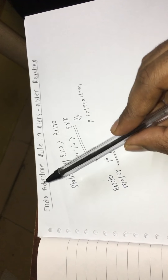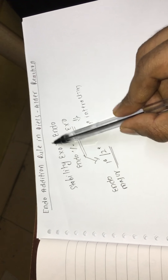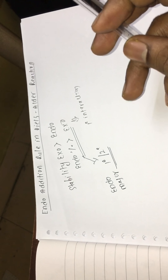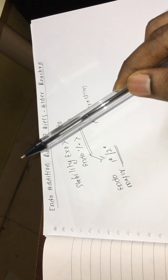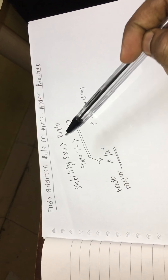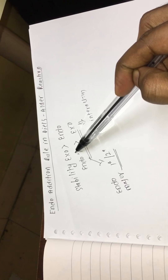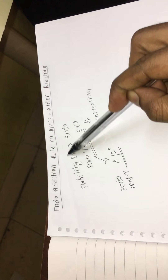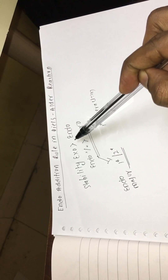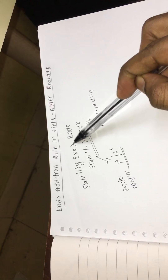Today we are going to talk about the endo addition rule in Diels-Alder reactions. Looking at the stability of exo and endo: the exo is more stable than the endo. So exo is the thermodynamic product and endo is the kinetic product. Thermodynamic product is always more stable than the kinetic product.